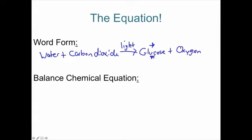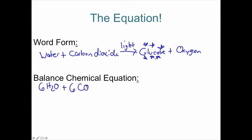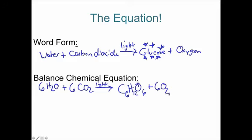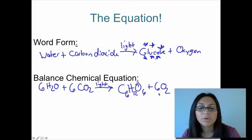Remember, glucose is the goal of photosynthesis — that's what the plant is trying to make; oxygen is simply a waste product. For the chemical equation: if you know the chemical formulas, you just bring them down and add the coefficients. Six water molecules plus six carbon dioxide molecules, light over the arrow, yields C6H12O6 (glucose) plus six oxygen molecules. That's the word equation and chemical equation for photosynthesis.